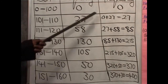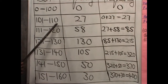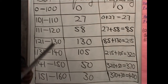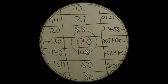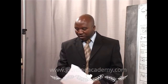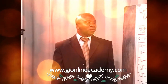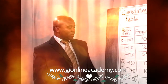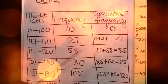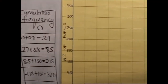Let us now plot the points that we have got. 100, 0. 110, 27. And so forth. So to do that, we use a graph paper. Let us move on to our graph paper and plot these values and then see how the quartiles will come out. This is how a graph paper looks like. I have an improvised graph paper on my board.